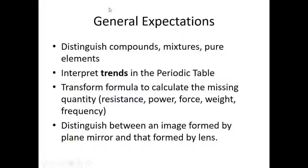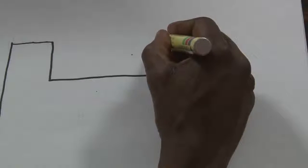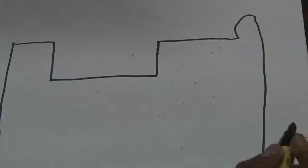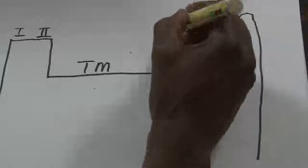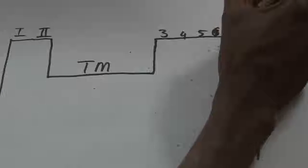You should also be able to interpret trends in the periodic table. Let me give a quick sketch: here I have group 1, group 1 and 2, then transition metals, and then group 3, group 4, group 5, group 6, group 7, and group 8. That is a very simple sketch of the periodic table.